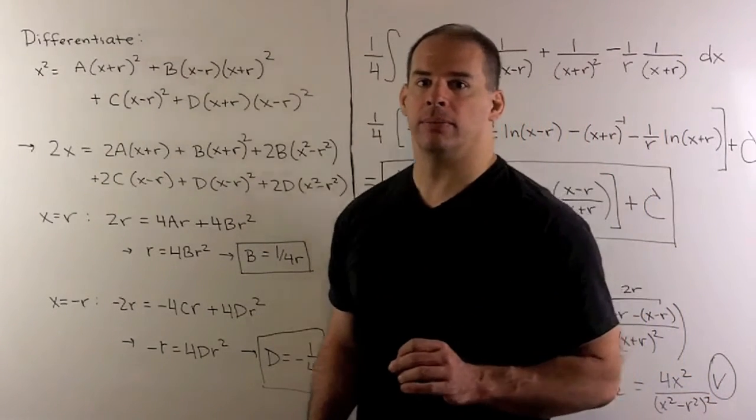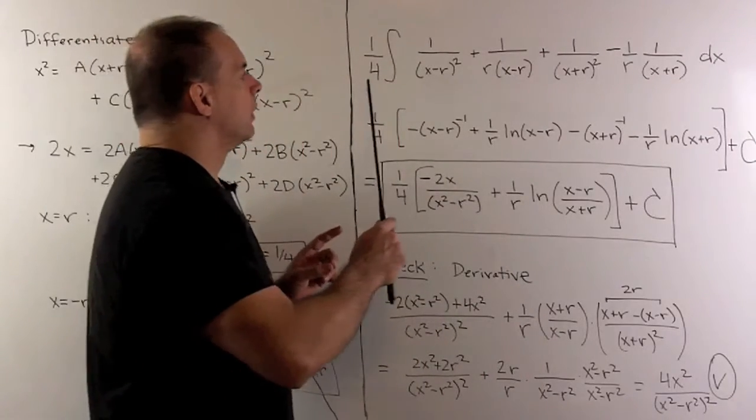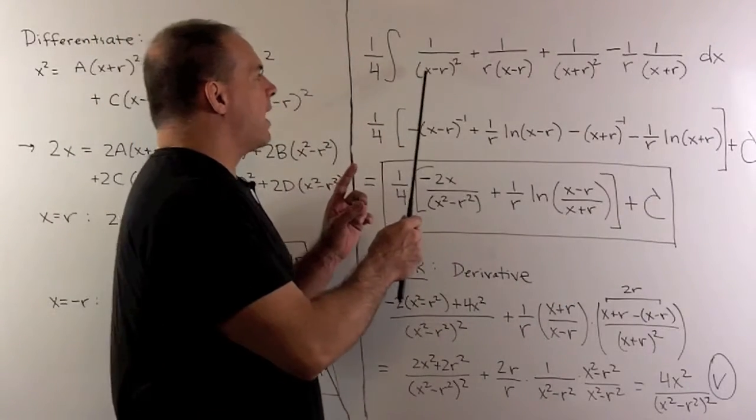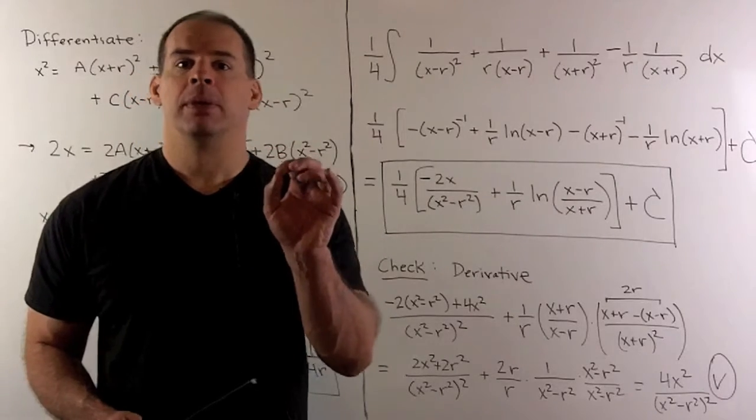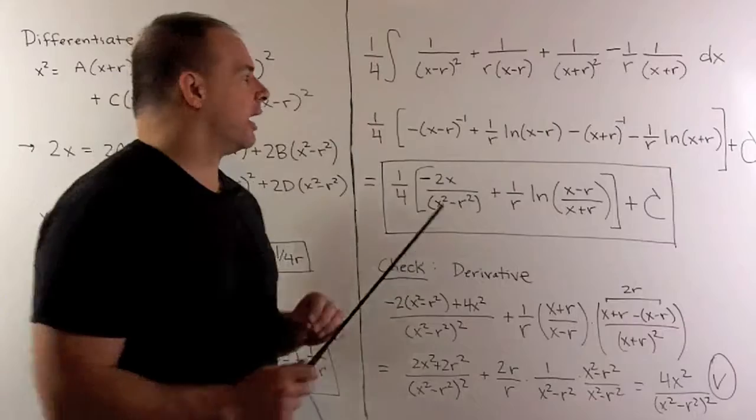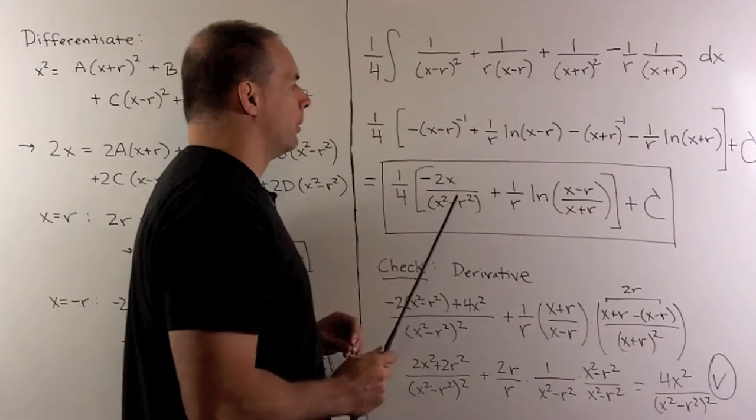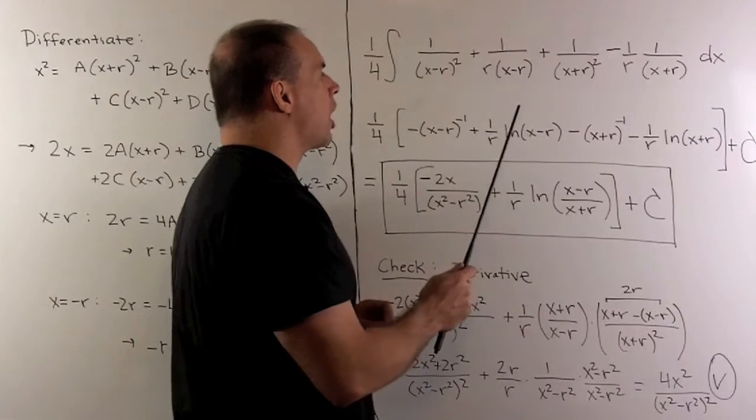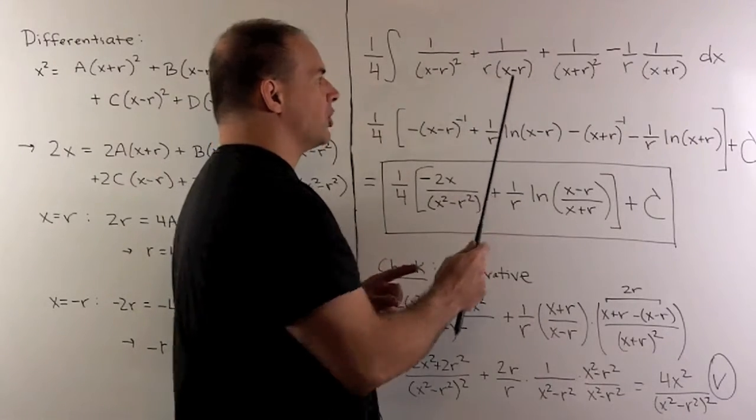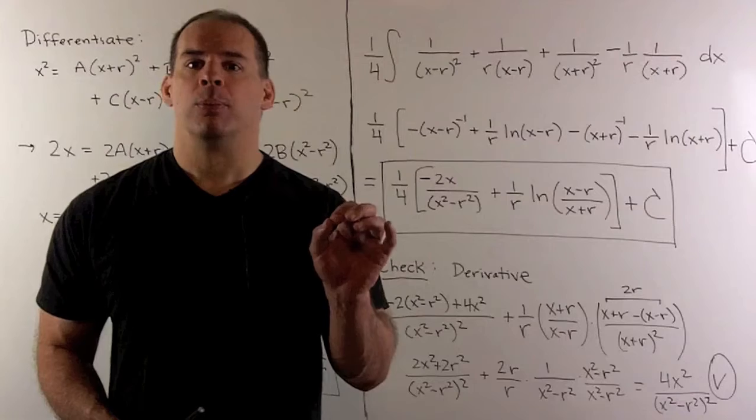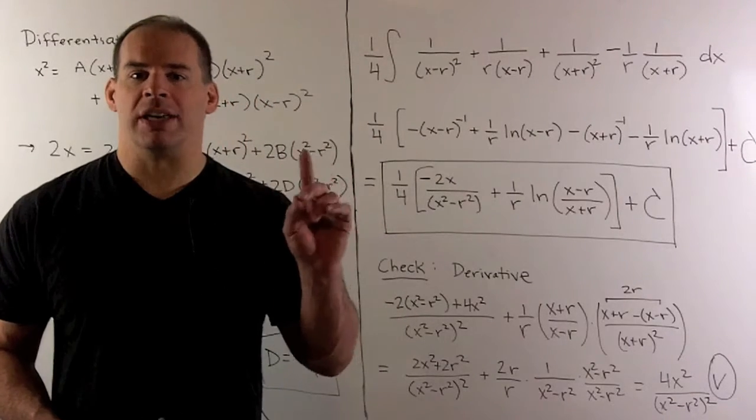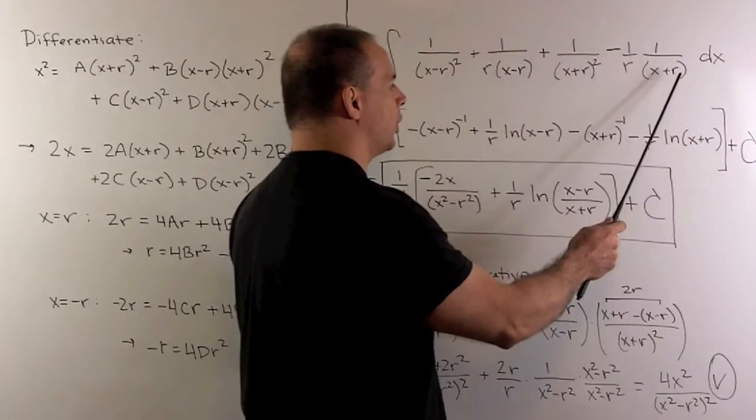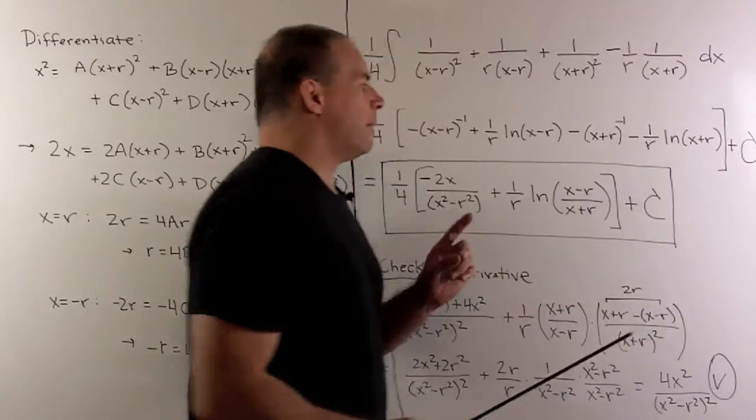Now we're going to integrate term by term. Let's save the 1 fourth till the end. Here I have x minus r to the minus 2. If we let u be equal to x minus r, we can work that out, and I get minus x minus r to the minus 1 power using a u substitution. For 1 over r, x minus r, just remember r is a number. So I have 1 over x minus r. If I let u be equal to x minus r, we're looking at any derivative of 1 over u. It's going to give me natural log of x minus r. Same idea for our last two terms. We get this expression, and now I want to combine things.